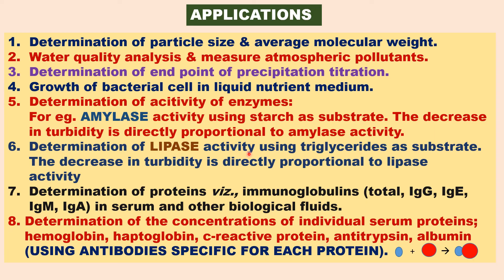Determination of lipase activity is also possible. For example, taking triglyceride oil in the cell, on adding lipase enzyme, it converts oils into glycerol and fatty acids, which are soluble, so the turbidity disappears. The decrease in turbidity is directly proportional to lipase activity. These techniques are also used for determination of proteins, especially immunoglobulins in serum and other biological fluids, and for determination of concentrations of several proteins in serum such as hemoglobin, haptoglobin, C-reactive protein, and antitrypsin, by using antibodies specific for each protein. When hemoglobin binds with its antibody it becomes turbid, and using this antibody-antigen interaction we can determine the concentrations of individual proteins specifically.